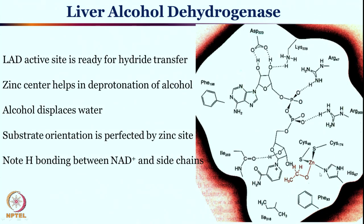How does this reaction occur overall? Looking at the active site — the zinc site is there, S-cysteine is there, cysteine is there, histidine is there — this is the third residue and this is the site where water binds. The moment the enzyme senses the presence of alcohol, water goes out and alcohol replaces it. Upon binding to zinc, deprotonation of the OH from the alcohol (RCH₂OH — for example ethanol) makes a zinc alkoxide complex.